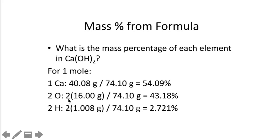Of course there's two oxygens, so you take two times 16.00 grams and divide by the total mass, which gives 43.18%. Finally, you do the same thing with hydrogen: two times 1.008 divided by the molar mass, which equals 2.721%.